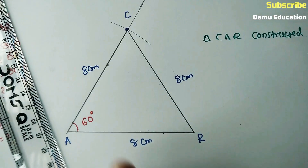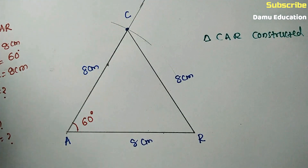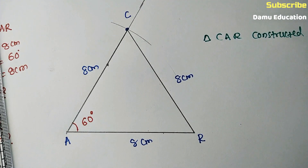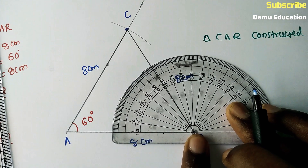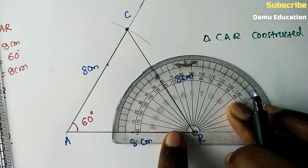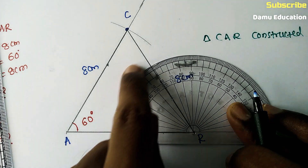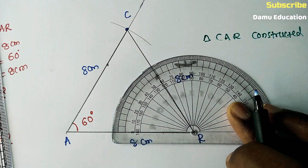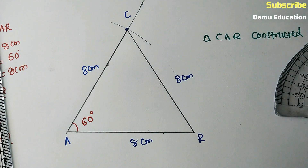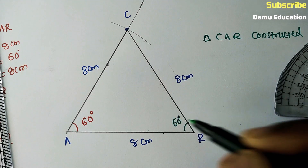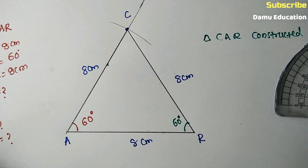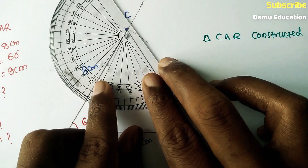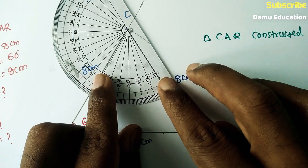CR is also equal to 8 centimeters, and AC is also equal to 8 centimeters. They also ask for the angle at R. Place the protractor with its center on R — this line coincides with the left side of the protractor, so measure from that side. The angle at R equals 60 degrees.